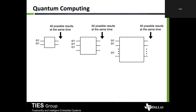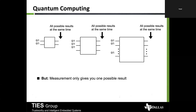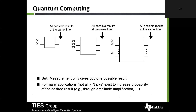Quantum computing works with both zero and one simultaneously — it has the probability of being in either state zero or state one, so all results can be possible at the same time. This causes an exponential number of states, which is very difficult to manage. Measurement only gives you one possible result, but there are tricks like amplitude amplification to increase the probability of the desired output.